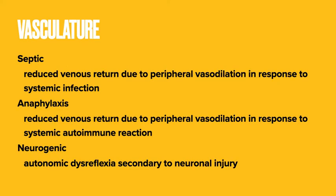Then there's septic, anaphylactic, and neurogenic shock. These are all distributive shocks, and they all occur because of excessive peripheral vasodilation. In septic shock, that's in response to cytokine release because of systemic infection. In anaphylactic shock, it's because of cytokine release due to a systemic autoimmune reaction. And in neurogenic shock, it is because of unopposed parasympathetic activity due to a neuronal lesion.